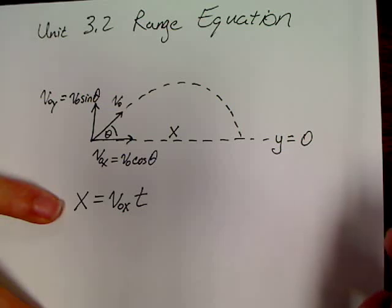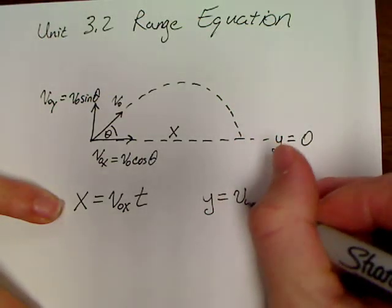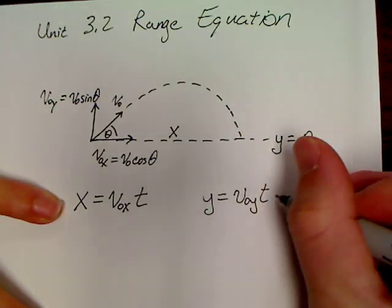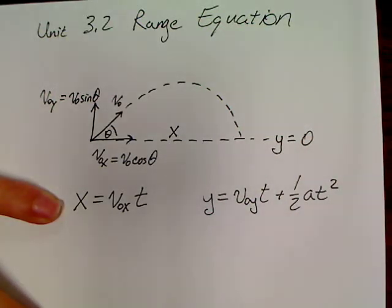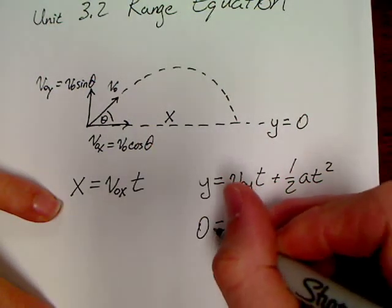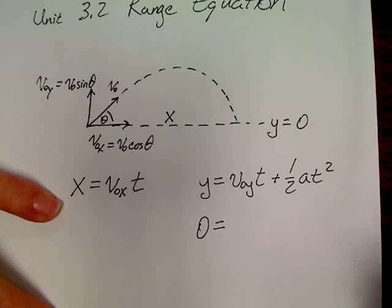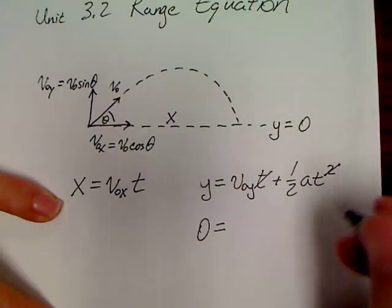In other earlier videos, you heard me say, if you're looking for time, the best equation you usually use is your second equation. So, let's just go for that. Y equals V0y t plus one-half a t squared. Now, here's the thing. We have a y value of zero.